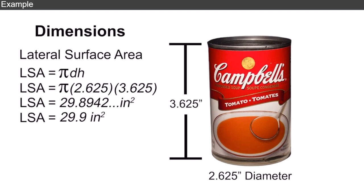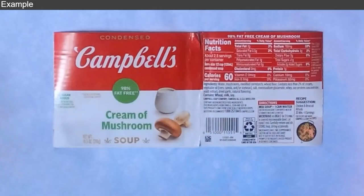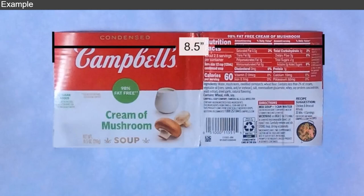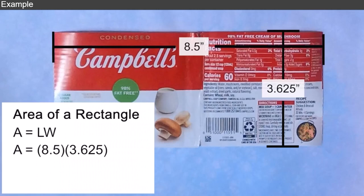Campbell's uses a label that's approximately 29.9 square inches to cover each soup can. We could also peel the label off and measure by hand the length and width of the resulting rectangle. The length measures 8.5 inches and the width measures 3.625 inches. Plugging those numbers in the area formula for a rectangle, area equals length times width, we get 30.8125 square inches.